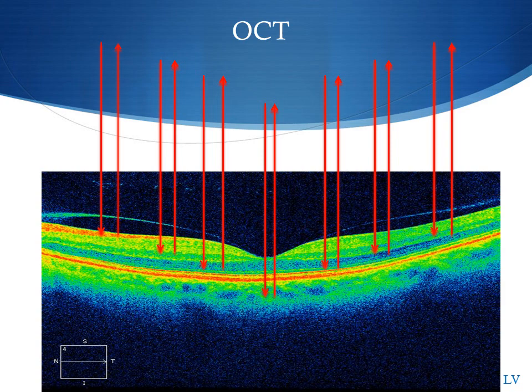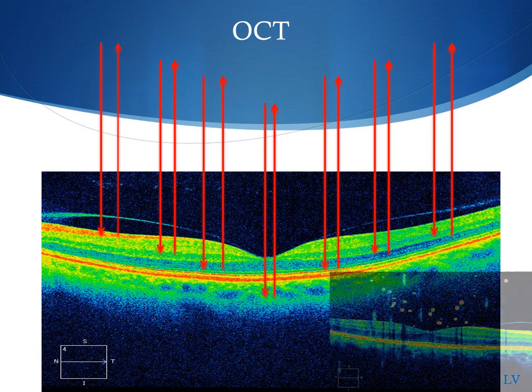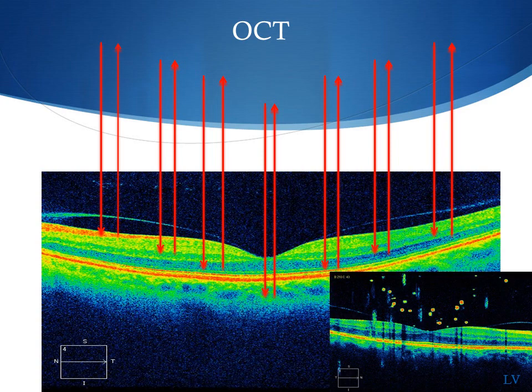Things that can block the light signal, such as asteroid hyalosis, will cause a decrease in the scan.